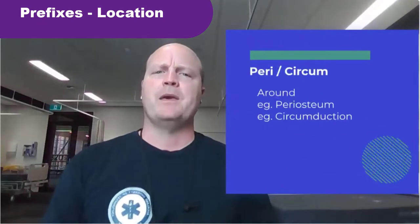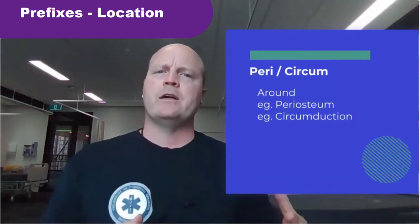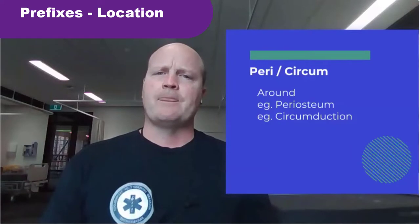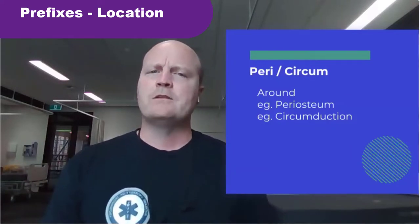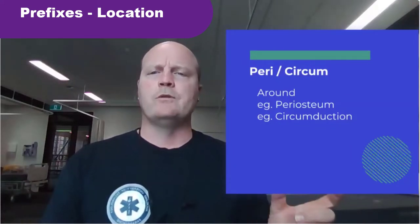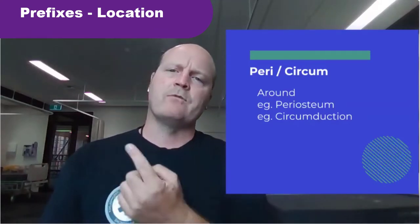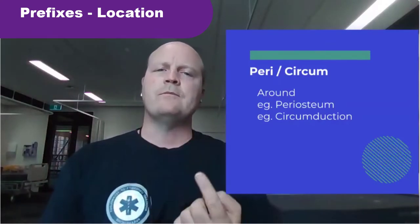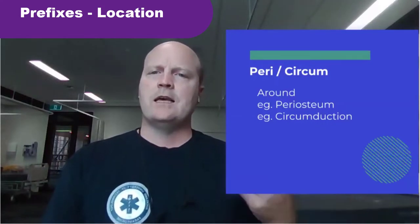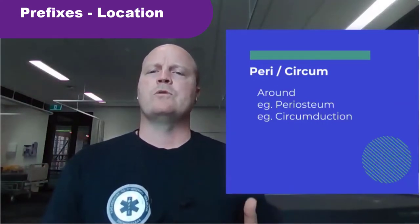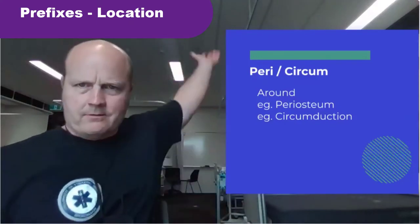First up we've got peri or circum. Every time you see peri or circum it means around. For example, periosteum — peri means around, osteo is bone, so the periosteum is that glad-wrap covering that goes around the bone. And circumduction is whenever we make a circle type movement with one of our limbs.